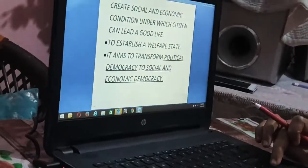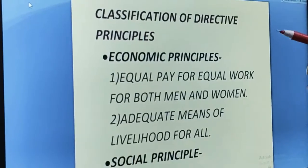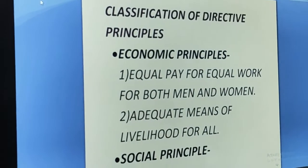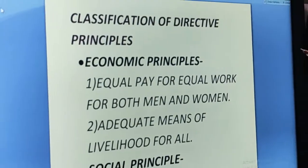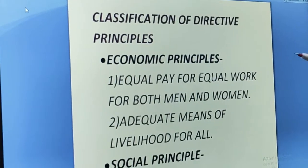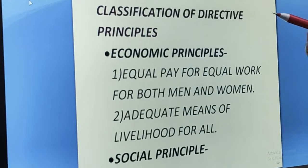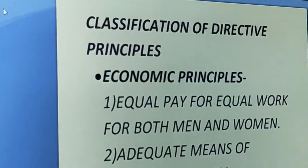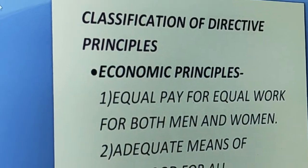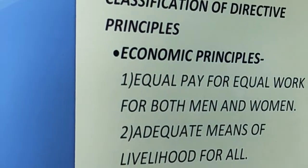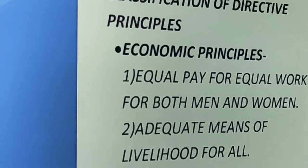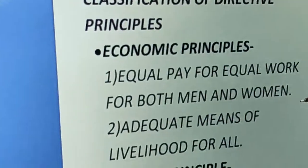A welfare state cannot be established only through political democracy — it has to also achieve social and economic democracy. So overall, the aim of Directive Principles is to establish a welfare state, and this is its national goal. The next topic is the classification of Directive Principles. The total number of directive principles is 21, but they are mainly categorized under four headings.